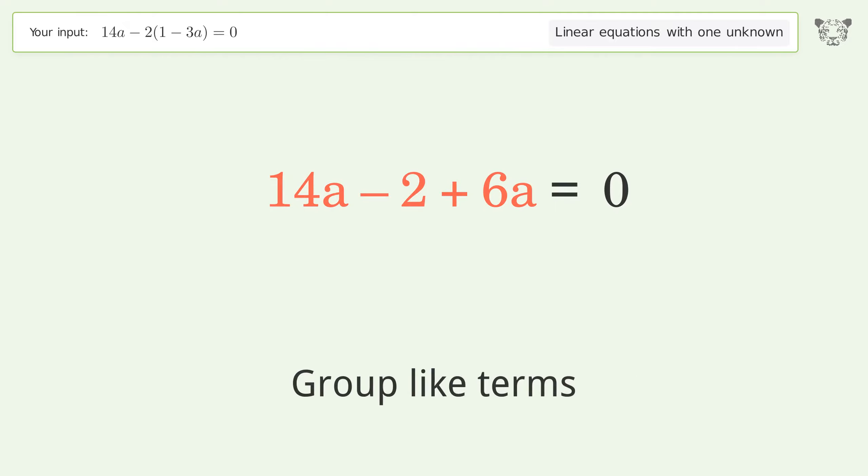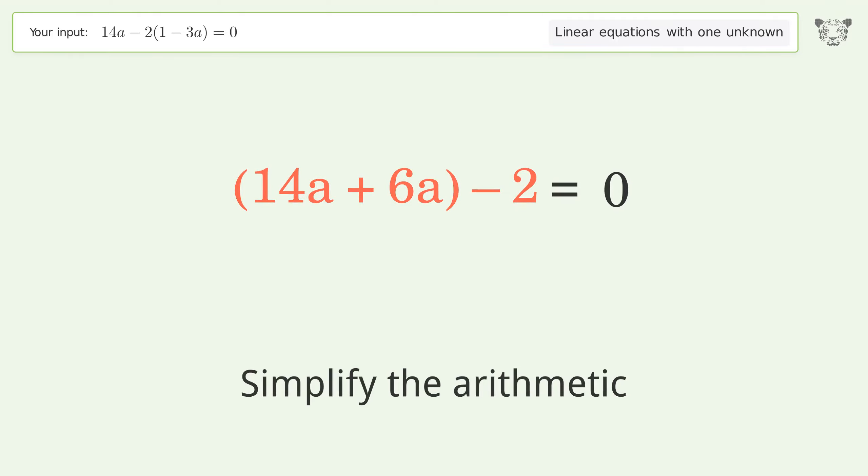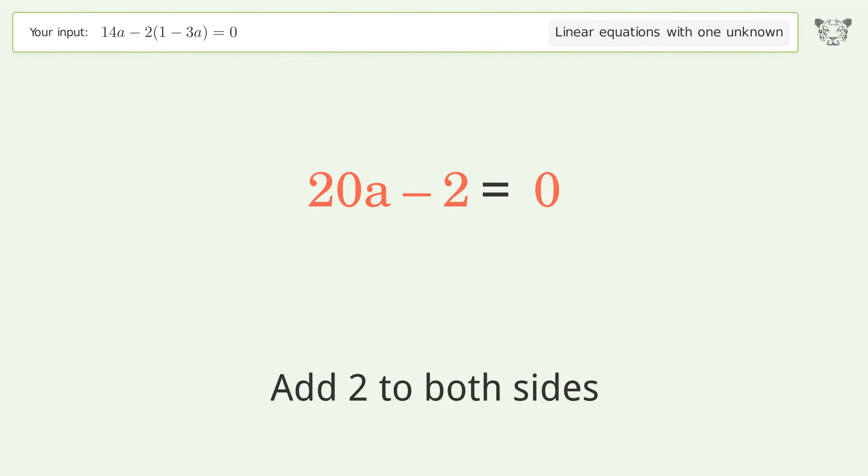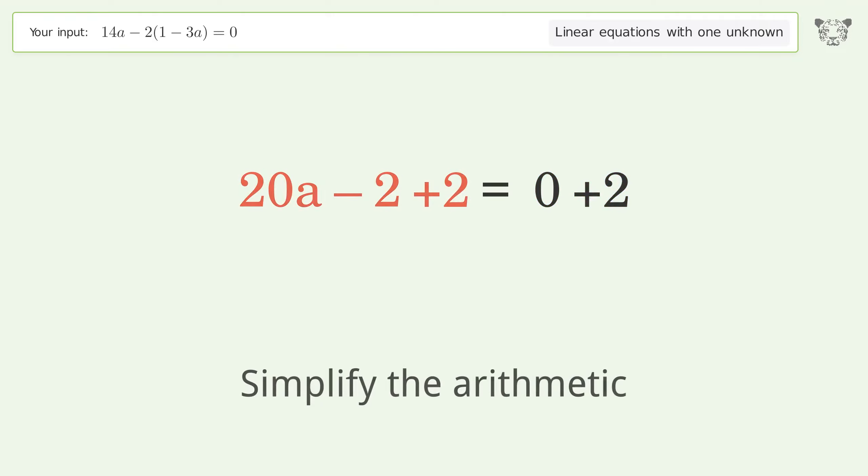Group like terms, simplify the arithmetic, then group all constants on the right side of the equation by adding 2 to both sides. Simplify the arithmetic.